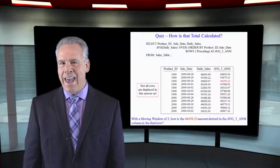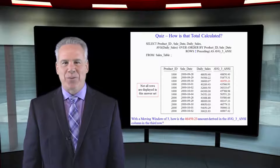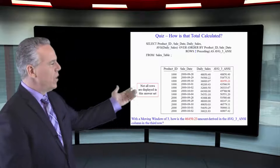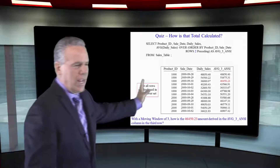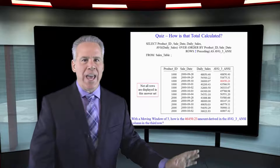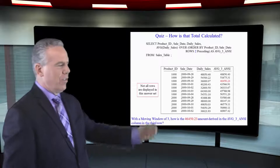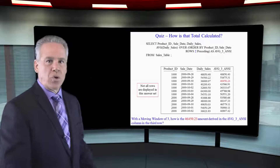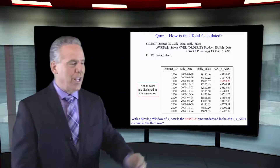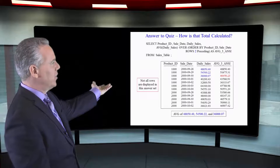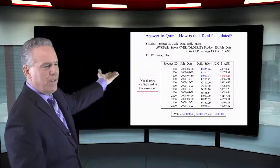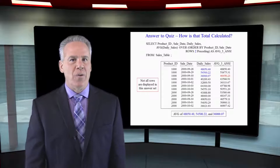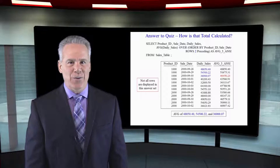We've got our moving average every three rows, or rows 2 preceding. You can see 46, 4, 50, 23 in red. How was that calculated? The previous three rows — or, in ANSI terms, the current row of 36,000, and then 54,5 and 48,8 and 50 — the current row and the two preceding.